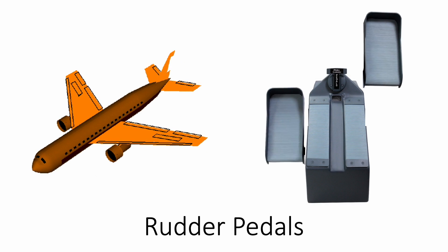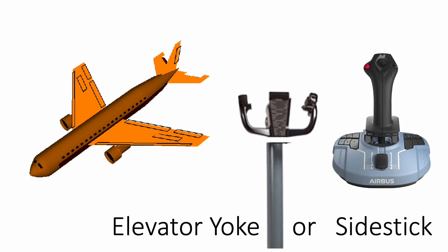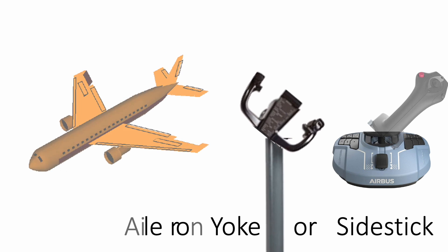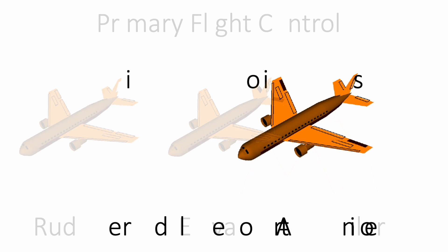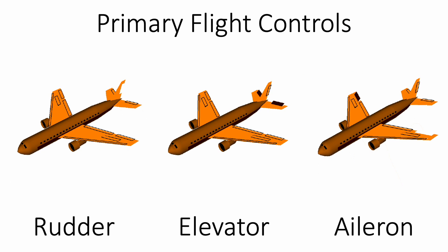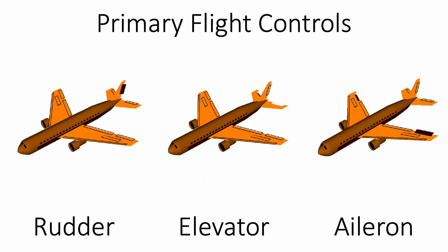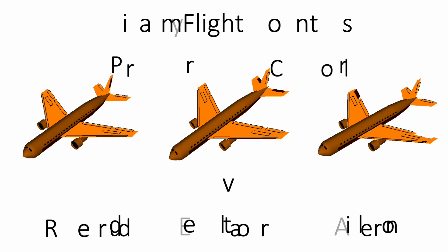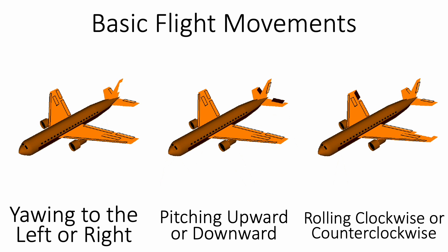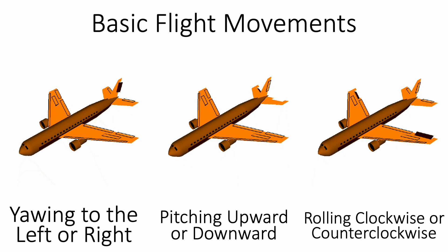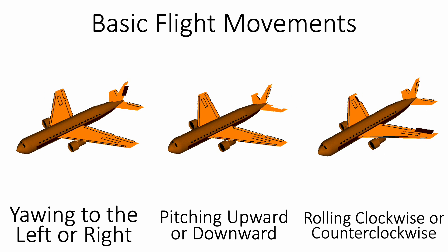In one of the earliest video uploads, we have already discussed about the primary flight controls of an airplane. They are the rudder, elevator, and ailerons. These control surfaces are responsible for yawing the airplane leftward or rightward, pitching the airplane upward or downward, and rolling the airplane clockwise or counterclockwise.